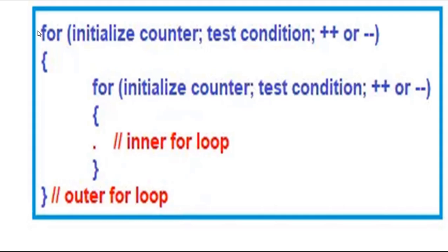We can define any number of loops inside another loop. In a nested for loop, one or more statements can be included in the body of a loop. The number of iterations will be equal to the number of iterations in the outer loop multiplied by the number of iterations in the inner loop.